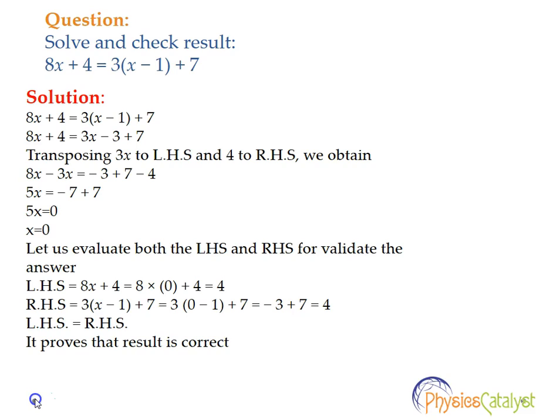Transposing 3x to the left-hand side and 4 to the right-hand side, we obtain 8x − 3x = −3 + 7 − 4, which equals 5x = 0. Therefore x = 0.